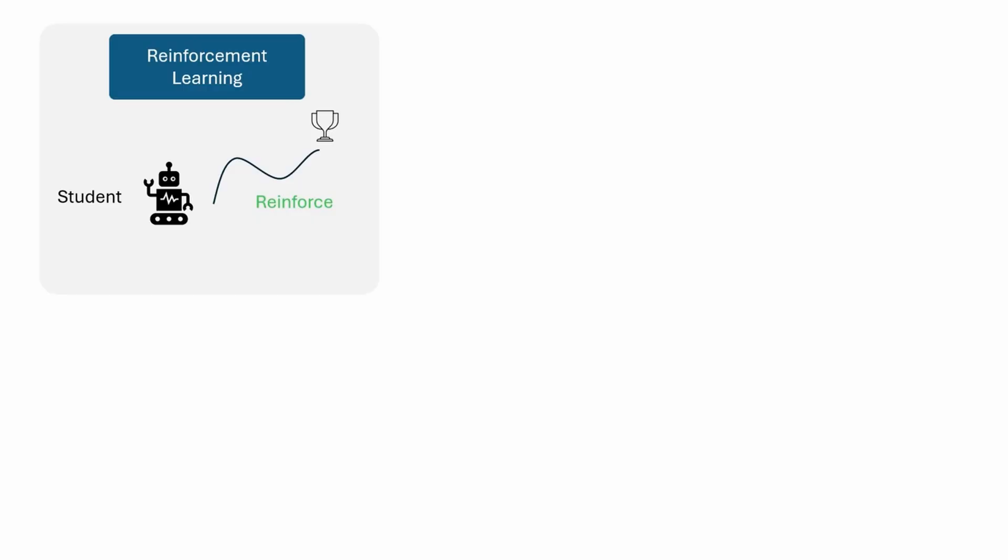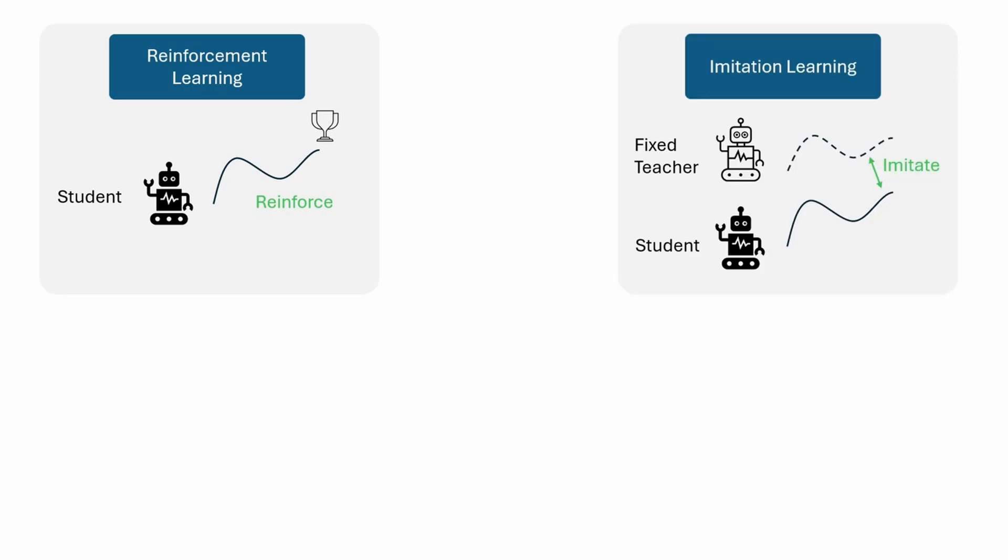Reinforcement learning has been applied successfully in several domains. However, RL usually requires extensive exploration. To mitigate extensive exploration, imitation learning with a privileged teacher has proven effective for learning complex control behaviors.